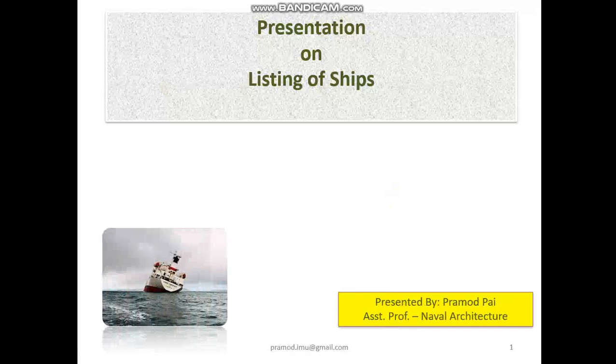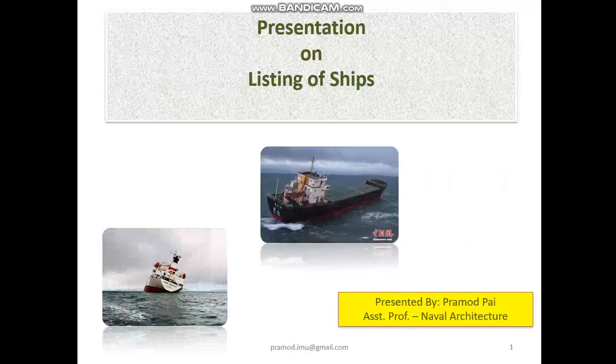Listing is a phenomenon in which a ship inclines about its central line. Now it can happen because of many reasons, but you have to primarily understand that we say a ship is in list when it has a permanent inclination either to the port or starboard side. So list is a permanent inclination, whereas healing to the port or starboard is a temporary inclination of the vessel about the central line.